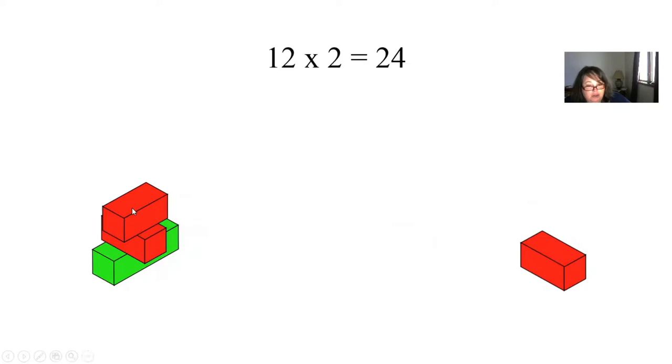And we pulled out one of the twos. So we halved this. We halved this one over here and brought a two over here. Now what's going to happen when I halve this again?